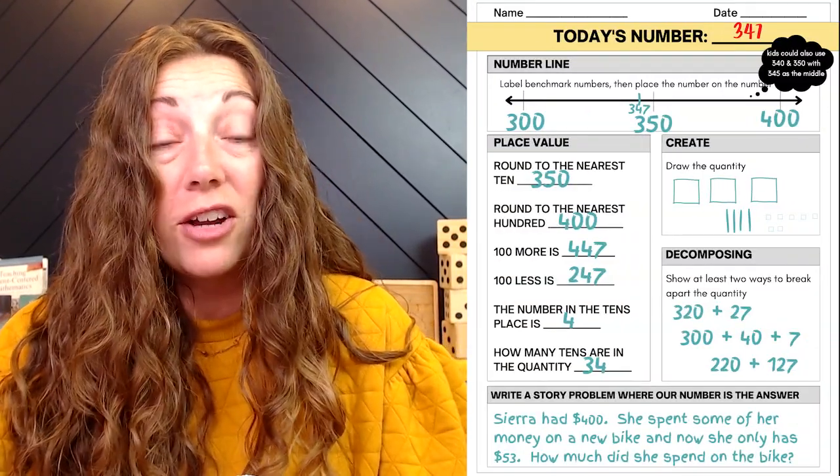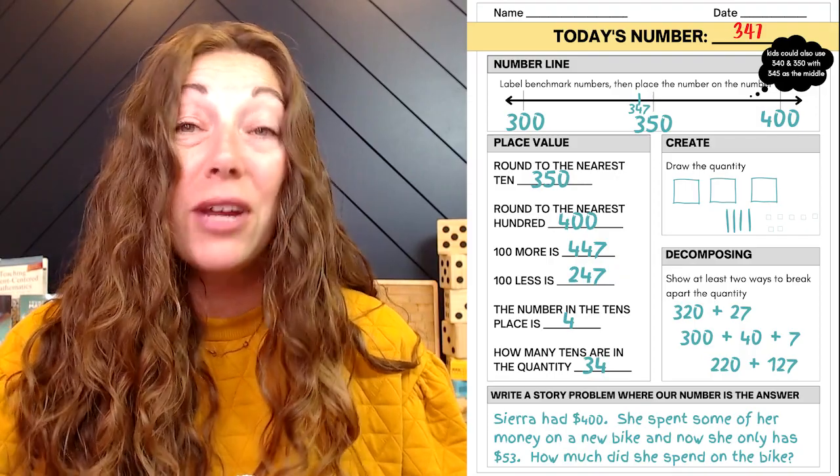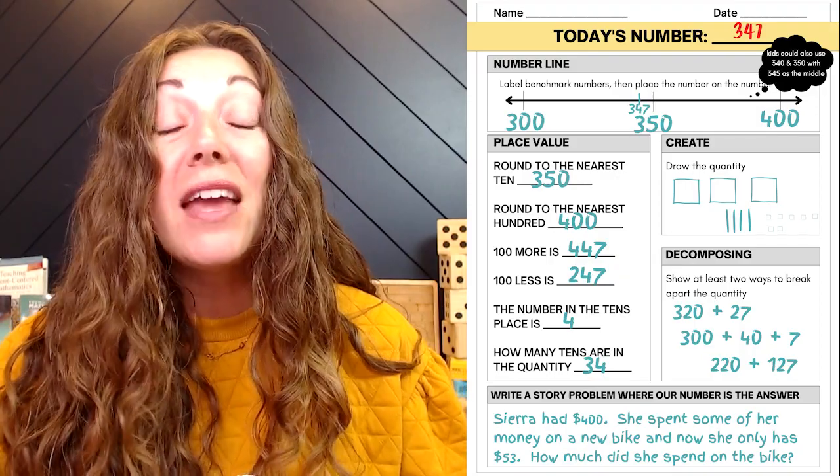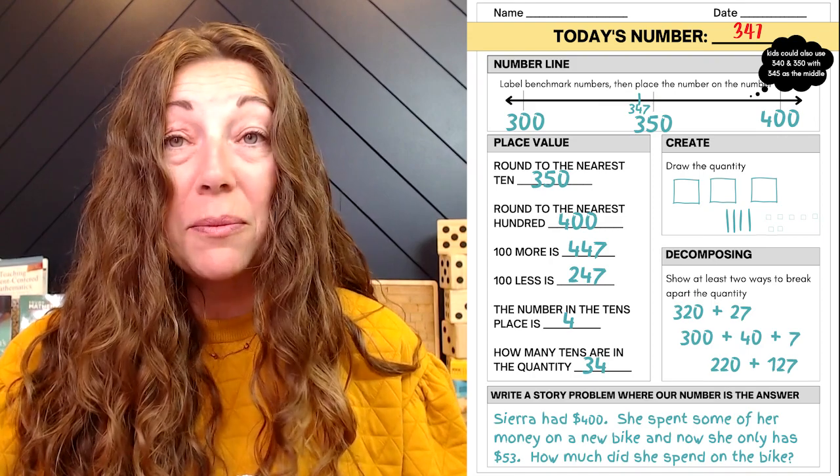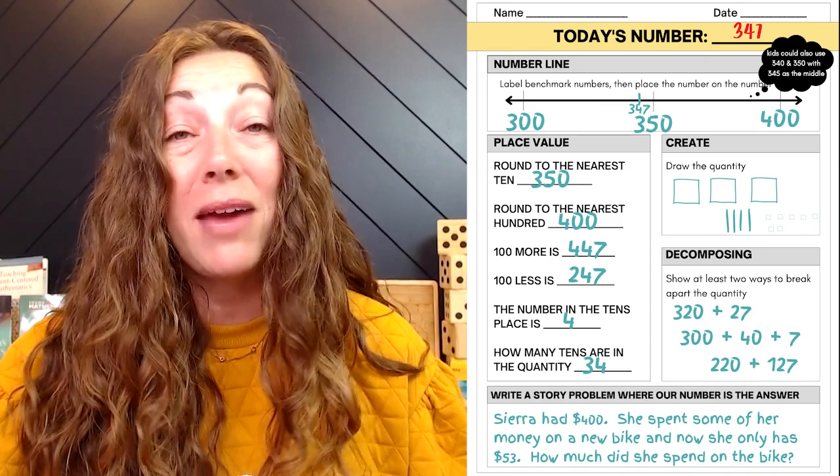They have a choice for what benchmark numbers they use. A kid could use 300 and 400 as the benchmarks, but it could also be 340 and 350. What they choose to use as benchmark numbers on their number line tells you about their mathematical understandings. And it's not just the kids who need choice — teachers need choice as well with these number of the day activities. Even teachers can get bored with the number of the day worksheets. If you're doing the same task every time, it doesn't become very fun, and it doesn't allow you to adjust the activities based upon what you see that your students need to work on.